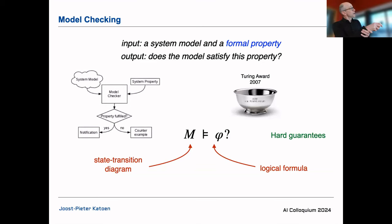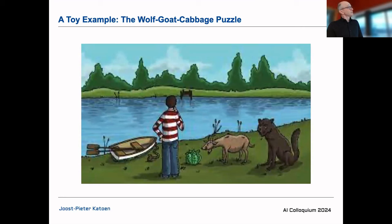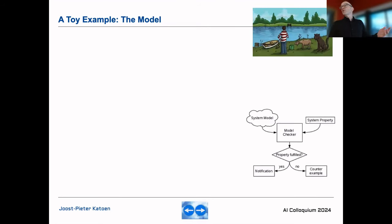Schematically, you have a model and a property, put them into a model checker. If the answer is yes, you're happy. If no, the model checker provides a counterexample — diagnostic information that tells you how to fix the model. Let me explain this with the wolf-goat-cabbage puzzle: a ferryman must bring a cabbage, a goat, and a wolf to the other side of the river.